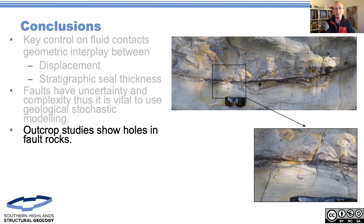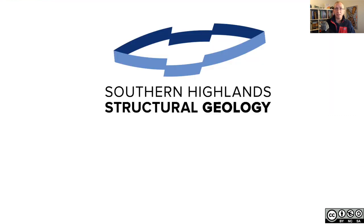The outcrop studies are showing holes in the fault rock. Systematic strike mapping of faults is showing a large amount of variability. That's why we urge a lot of caution about trying to use the membrane seal algorithms. We will be going through a range of more case studies and some of the field work in the coming weeks.